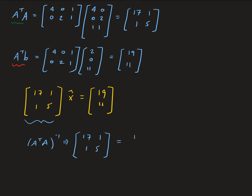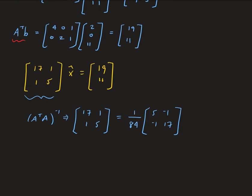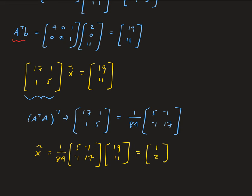So A transpose A inverse — we're going to take the inverse of 17, 1, 1, 5. The determinant of this matrix is 84, and we multiply by the matrix 5, negative 1, negative 1, 17. So X hat will be equal to 1 over 84, times 5, negative 1, negative 1, 17, times this vector, giving us the vector 1, 2.